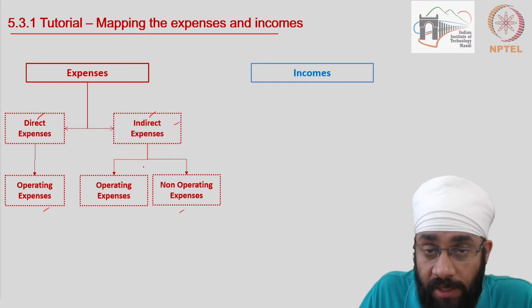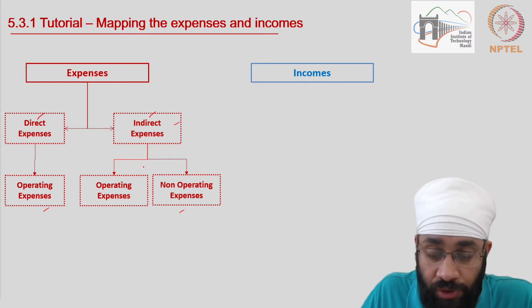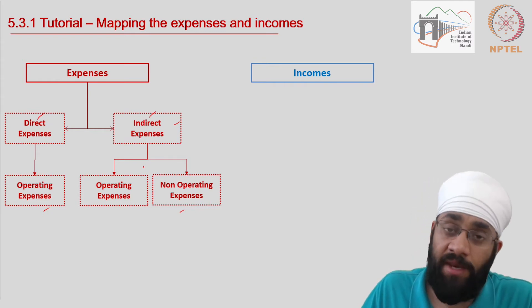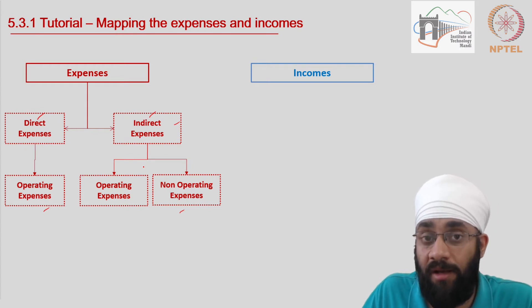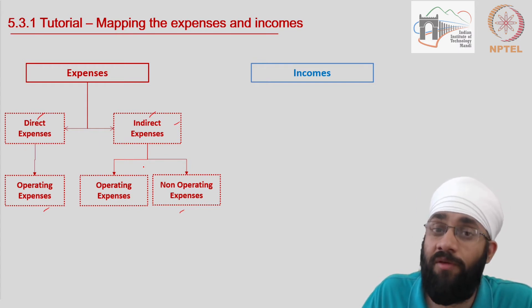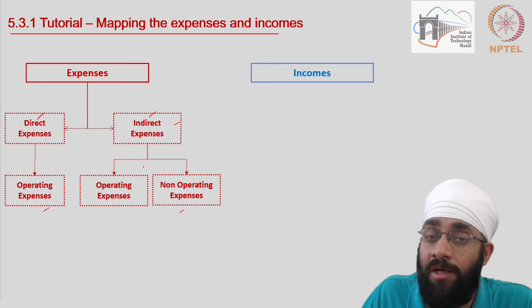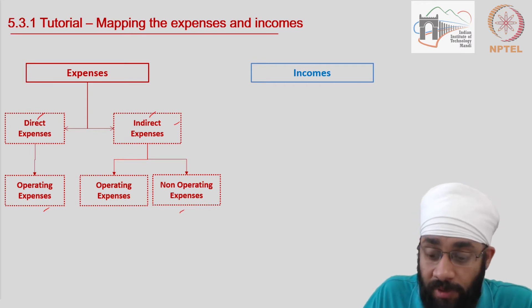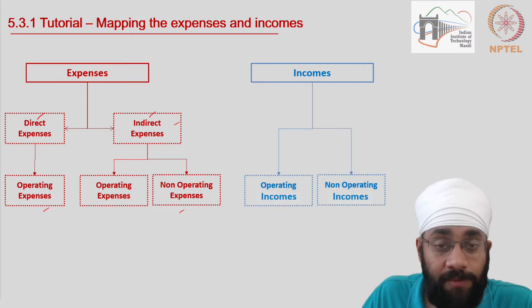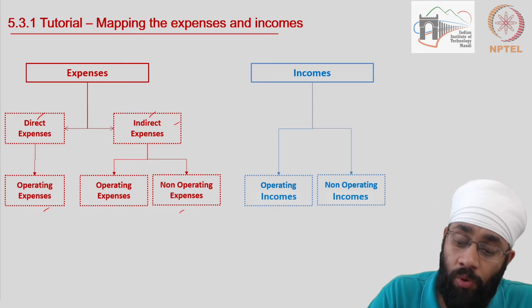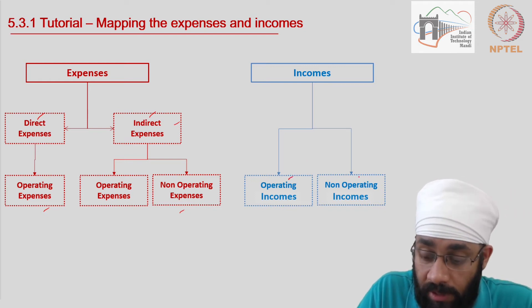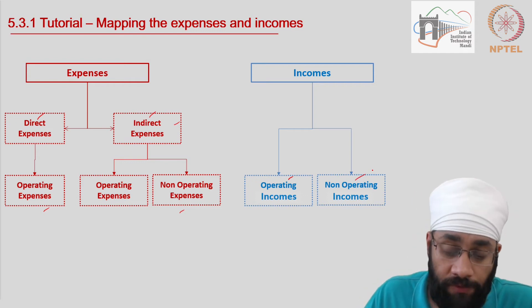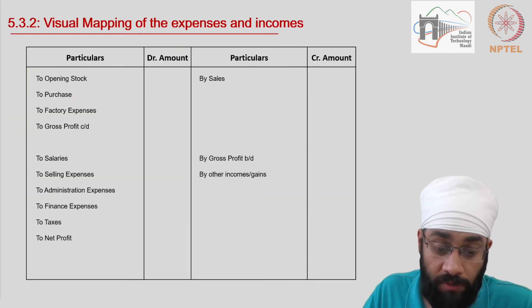As far as incomes are concerned, there is no categorization of direct or indirect income, because the direct and indirect categorization is only for finding out the manufacturing cost. Sales incomes work in a different manner. So there is only one categorization for incomes, which is operating income and non-operating income.